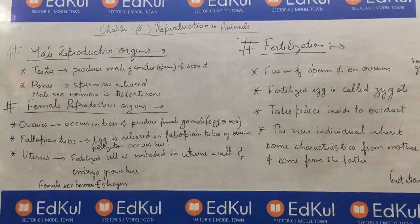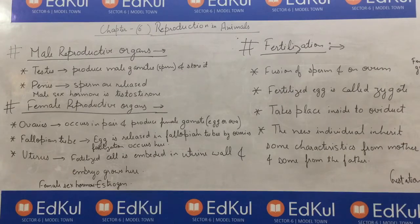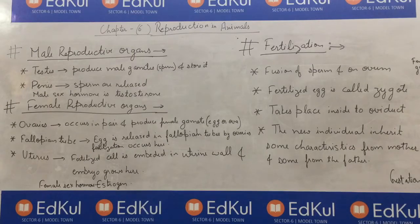In your book, the diagram of gametes is also given — male gamete and female gamete. You can see the female gamete is circular in shape, and the male gamete has a head, middle piece, and tail.